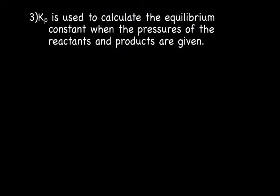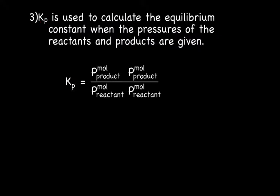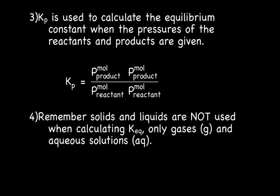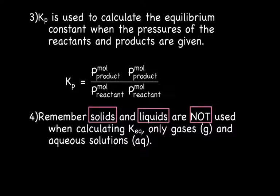We also have KP. KP is used to calculate equilibrium concentration when we are given partial pressures — so this applies when we have gases. The equation for KP is the pressure of the product to the number of moles of that product, times the pressure of the next product to its moles, divided by the pressure of the reactant to its moles, and so on. One important thing to remember: solids and liquids are not used when calculating KEQ. We only use gases and aqueous solutions. When you run across a solid or a liquid in your equation, ignore it.